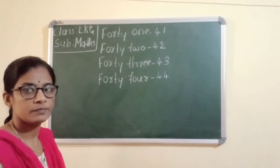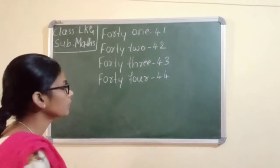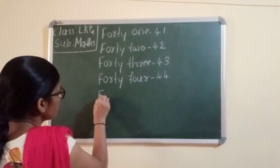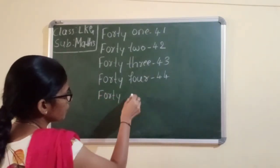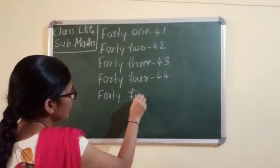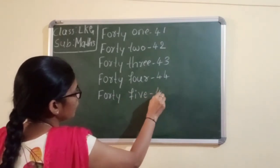Next one, 45. First you write 40 spelling, F-O-R-T-Y, forty. 5 spelling, you should write 5 spelling, F-I-V-E, five. 45.